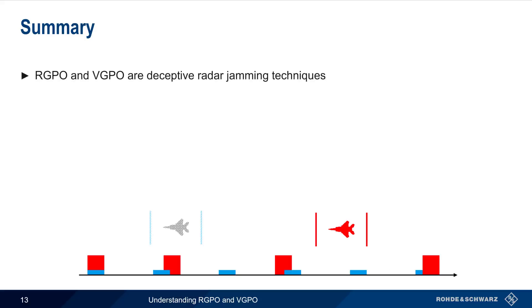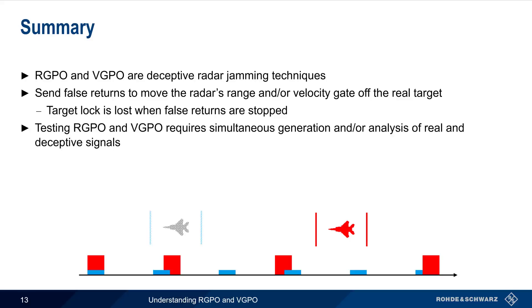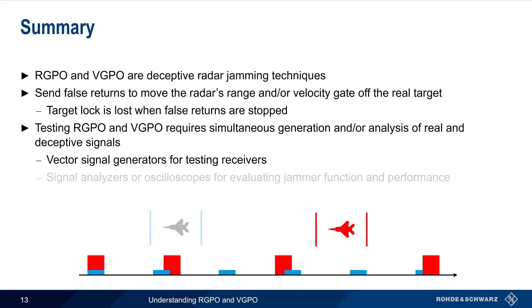In summary, Range Gate Pull-Off and Velocity Gate Pull-Off are deceptive radar jamming techniques in which false returns are transmitted by the target to move the radar's range or velocity gate off the real target. Once the gate has been moved far enough away, the deceptive returns are stopped and target lock is lost. Testing requires simultaneous generation and analysis of both real and deceptive signals; a vector signal generator is used to create both signals for receiver testing, while signal analyzers are the most common tool for evaluating jammer function and performance, though oscilloscopes can also be used. This concludes the presentation on Understanding Range Gate Pull-Off and Velocity Gate Pull-Off. Thanks for watching.